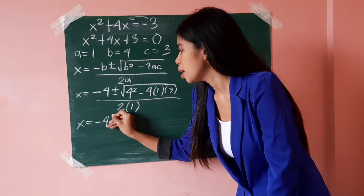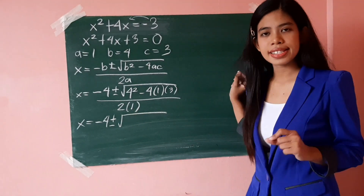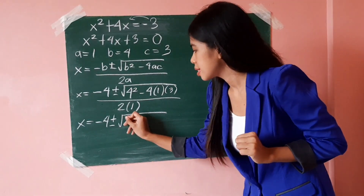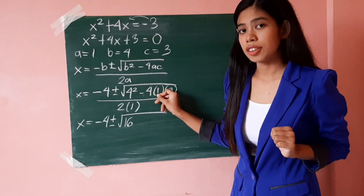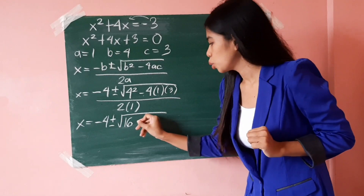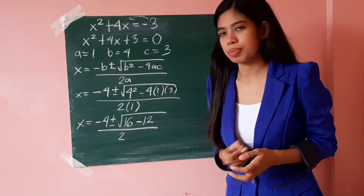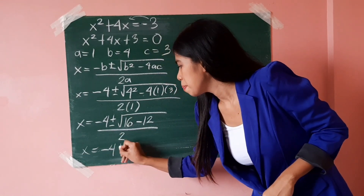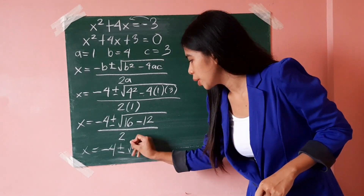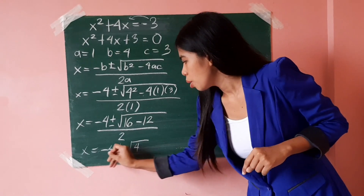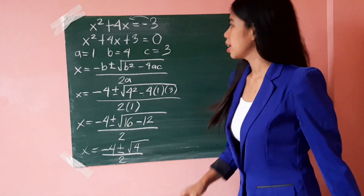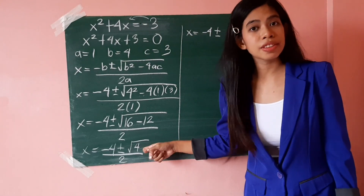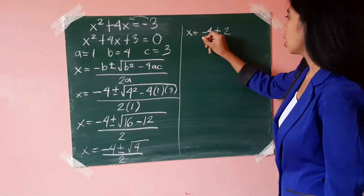So x equals negative 4, plus or minus square root of — simplifying everything inside the radical — 4 squared is 4 times 4 which is 16, minus 4 times 1 times 3 is 12, all over 2 times 1 which is 2. Simplifying inside the radical, 16 minus 12 is 4, all over 2. The square root of 4 is 2, so x equals negative 4, plus or minus 2, all over 2.